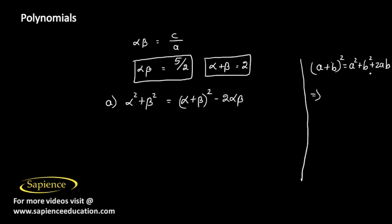Taking 2ab to the left-hand side gives (a + b)² - 2ab = a² + b². So for our expression, α² + β² = (α + β)² - 2αβ.